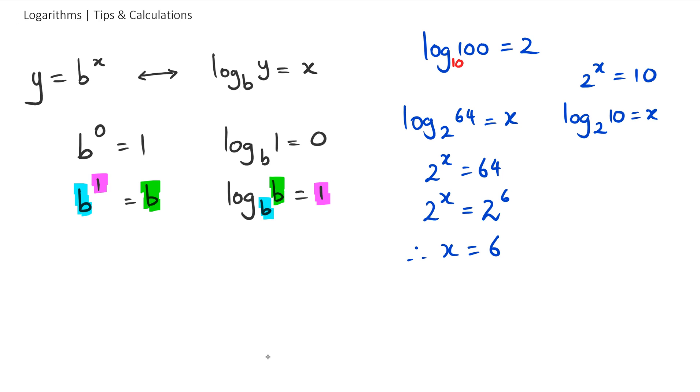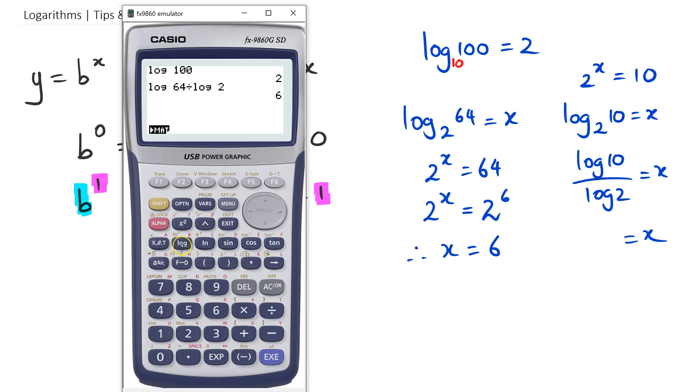Which means we can write this as log 10 divided by log 2. I'm going to go log 10 divided by log 2. Remember I told you it's going to be between 3 and 4 because 2³ is 8 and 2⁴ is 16. In this case you can see that x is equal to 3.322.